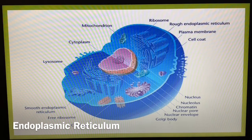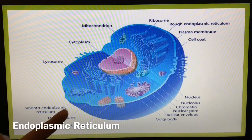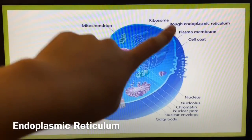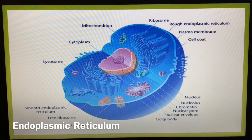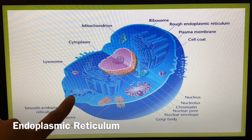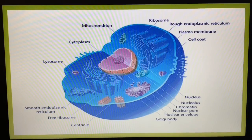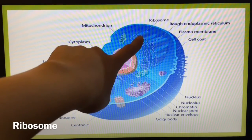As you can see on the illustration, there are two types of endoplasmic reticulum: rough endoplasmic reticulum and smooth endoplasmic reticulum. The rough endoplasmic reticulum gets its rough appearance from the many ribosomes attached to the outer surface of its membrane. The smooth endoplasmic reticulum, on the other hand, does not have ribosomes attached to it.